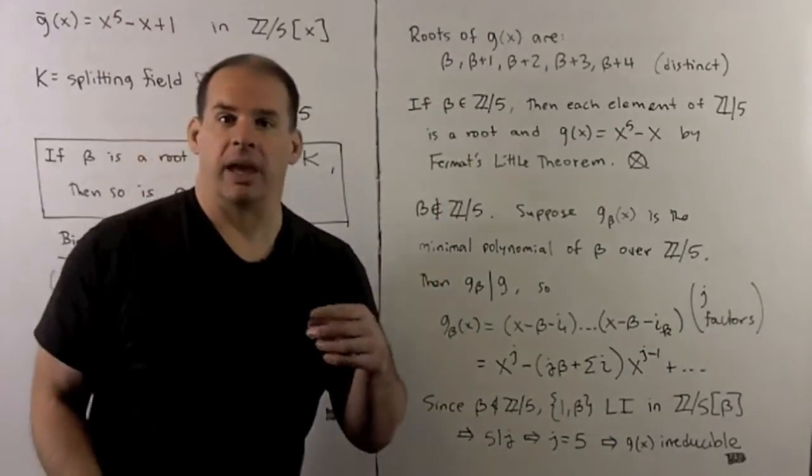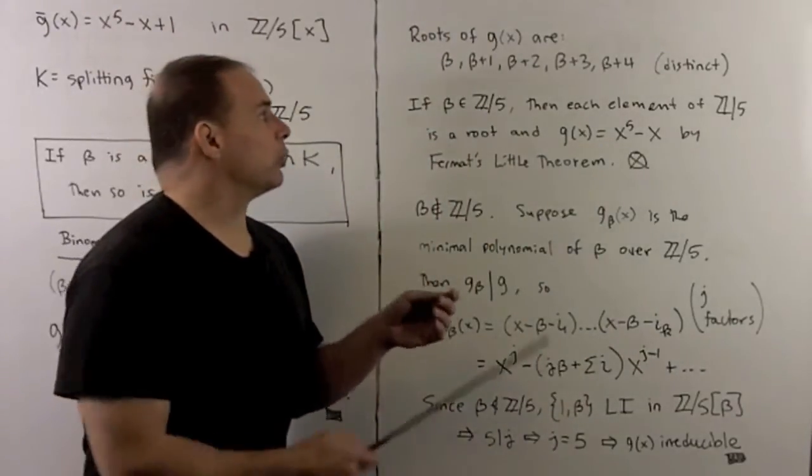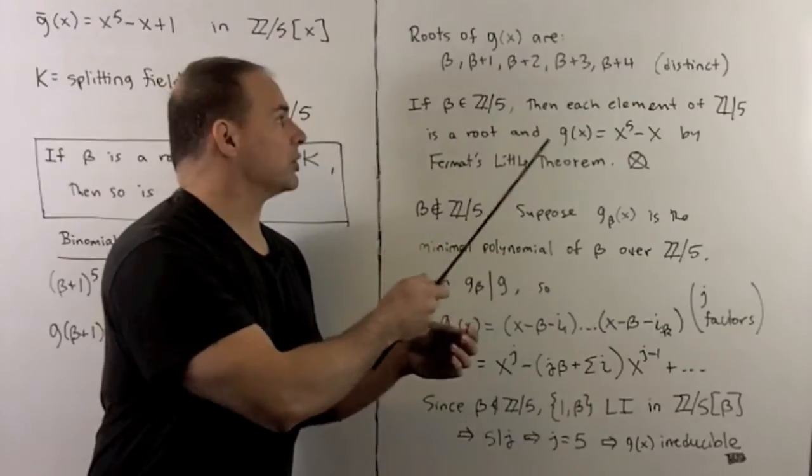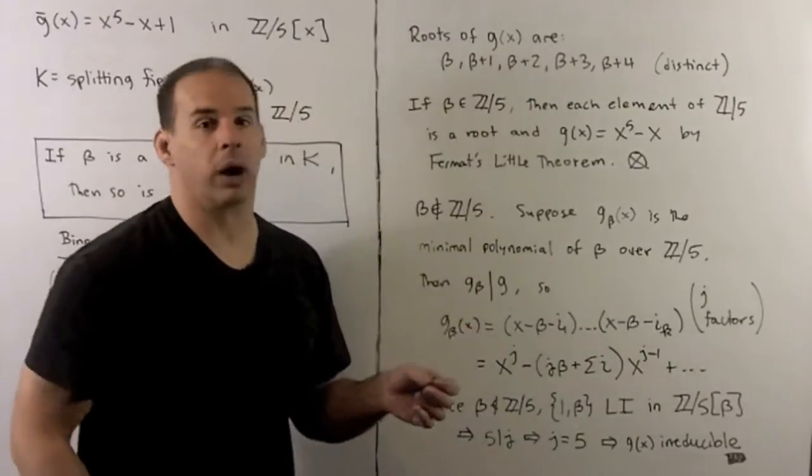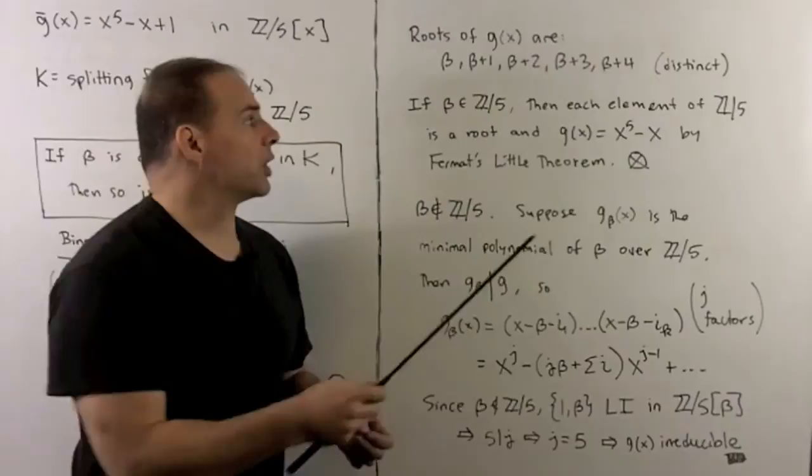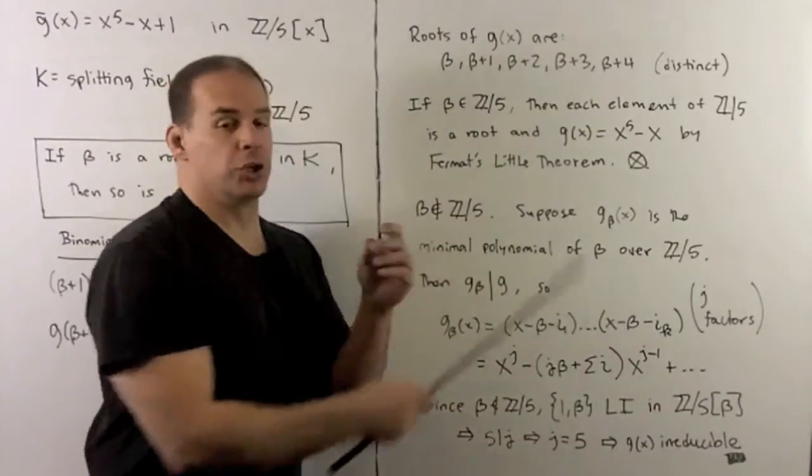Now, if I find a beta, I could just keep applying this, and then we get the roots beta, beta plus one, beta plus two, beta plus three, beta plus four. These are all distinct. So we know all the roots for g.